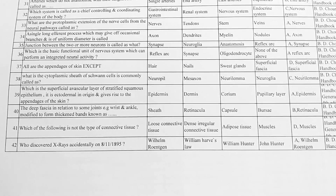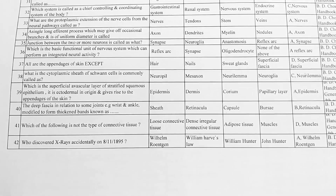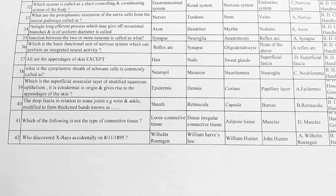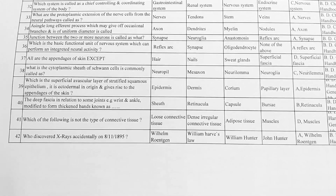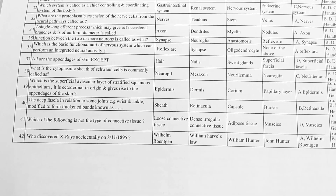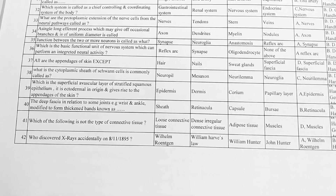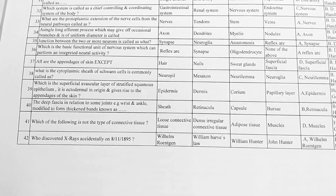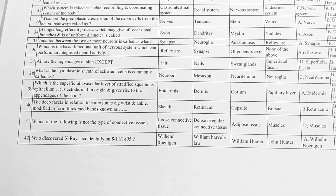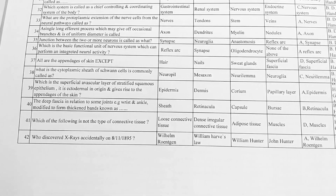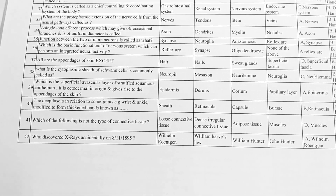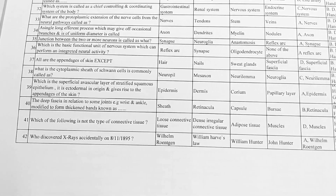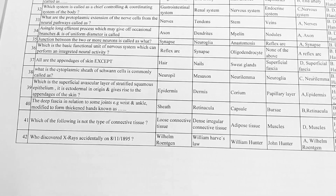Next, what are the protoplasmic extensions of the nerve cells forming the neural pathway called? Options: A. nerves, B. stem, C. veins. Option A is correct, nerves. Next, a single long efferent process which may give off occasional branches and is of uniform diameter is called — options: A. axon, B. dendrites, C. myelin, D. nodules. Option A is correct, axon.